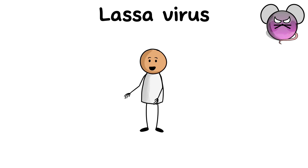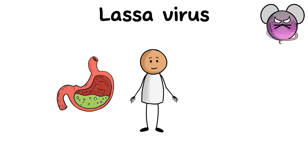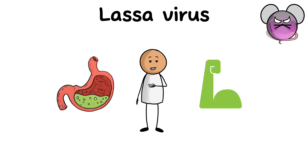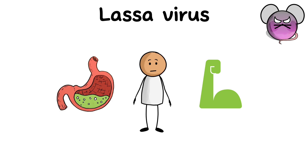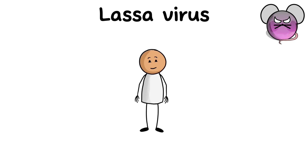Symptoms of Lassa fever include high fever, headache, pain in muscles, throat, and abdomen, nausea, vomiting, diarrhea, and sometimes bleeding from the gums and other organs. In some cases, acute renal failure, encephalitis, and death may occur.